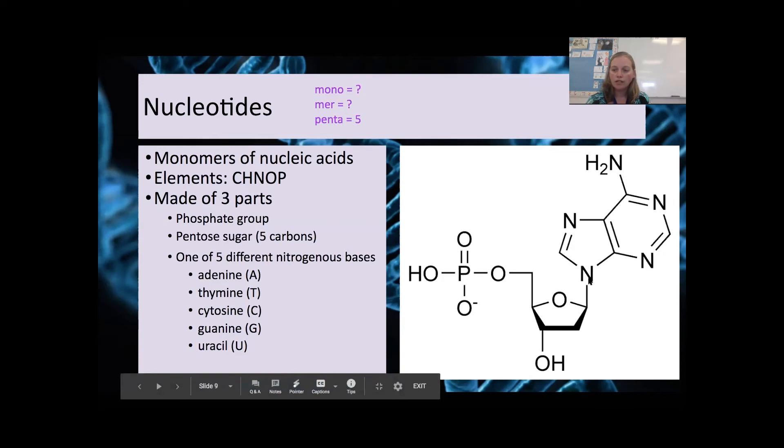The last element we have is nitrogen, and that's going to be found in this nitrogenous base here. There are five different nitrogenous bases, adenine, thymine, cytosine, guanine, and uracil. Usually they're referred to by their first letter. A, C, and G are used in all nucleic acids, but thymine and uracil are only used in certain nucleic acids, and we'll talk about those differences in a little while.